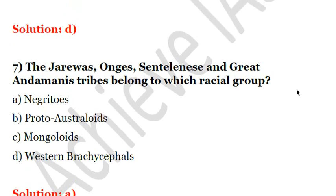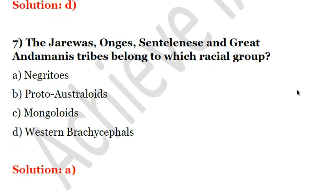Next question: the Jarawas, Ongs, Sentinelese, and Great Andamanese tribes belong to which racial group? A, Negritos. B, Proto-Australoids. C, Mongoloids. D, Western Brachis. The answer is A — Negritos. These tribes, including the Jarawas, Sentinelese, Ongs, and Great Andamanese, are classified as Negritos.